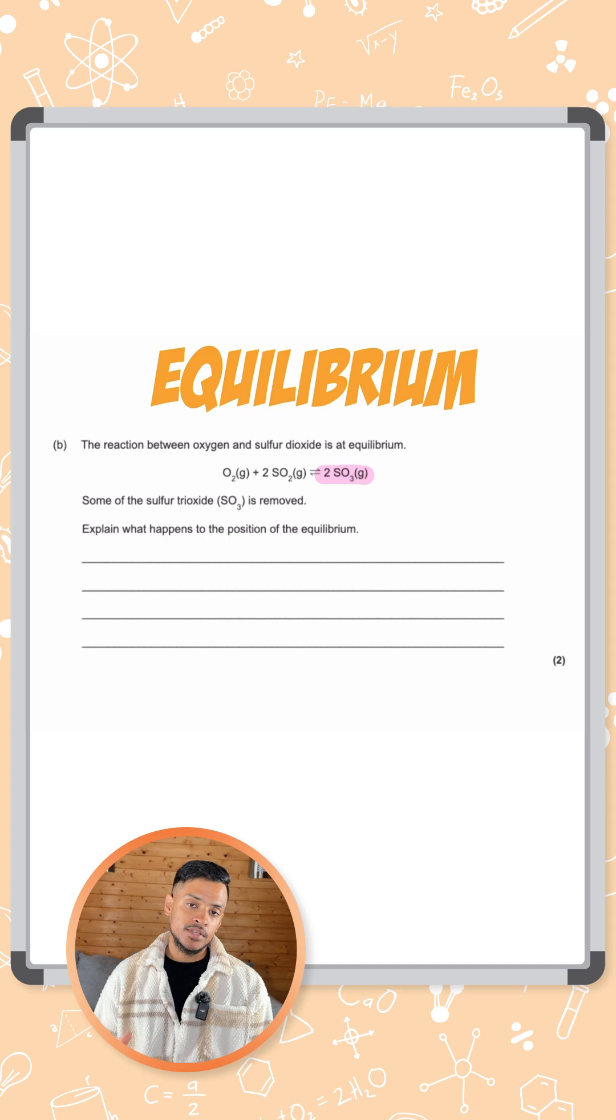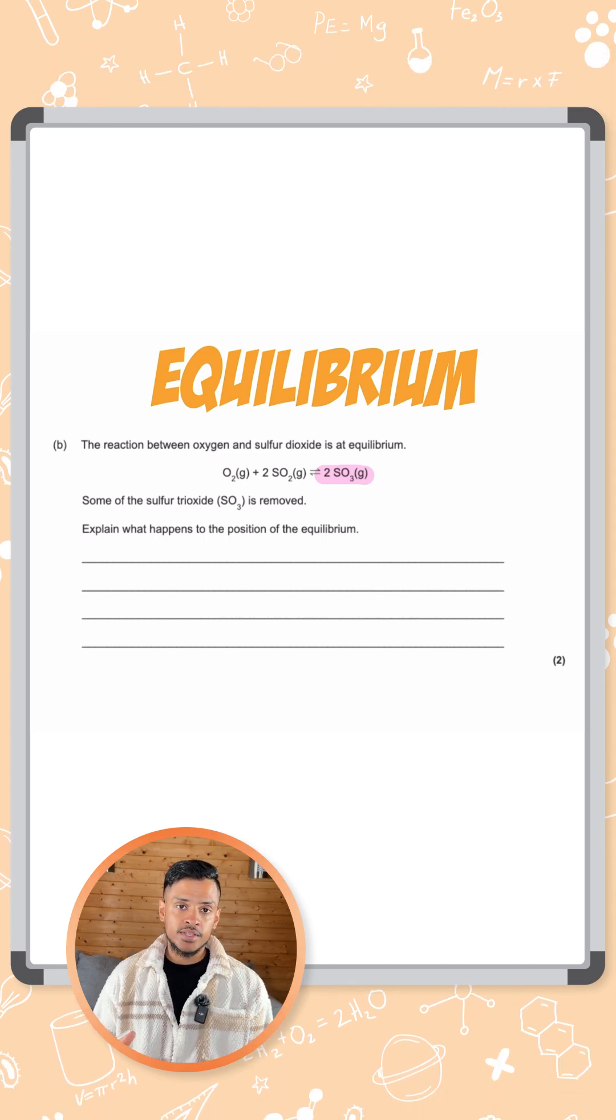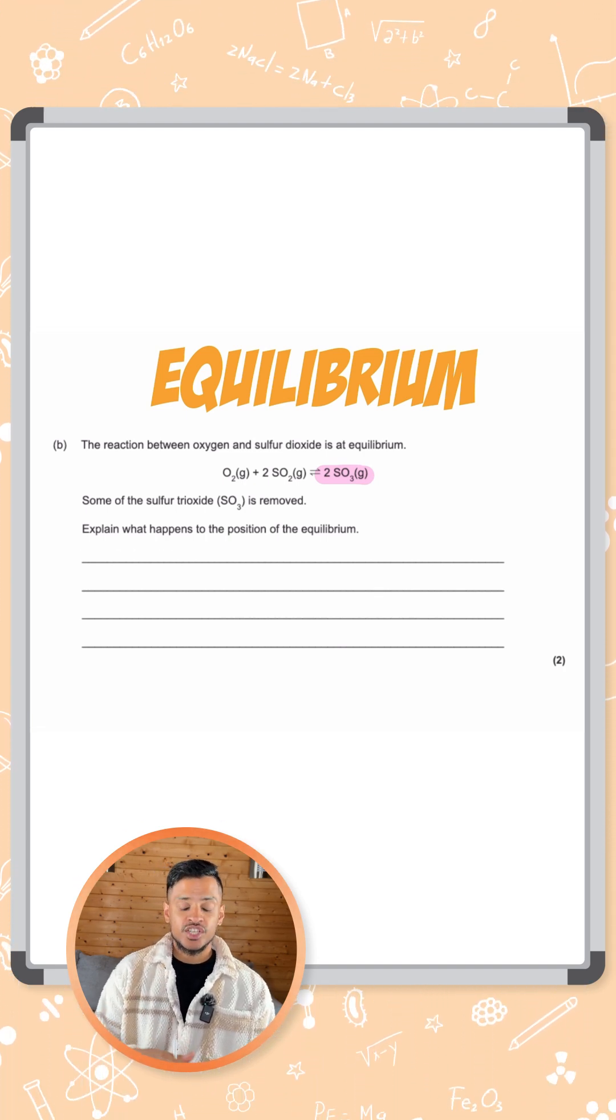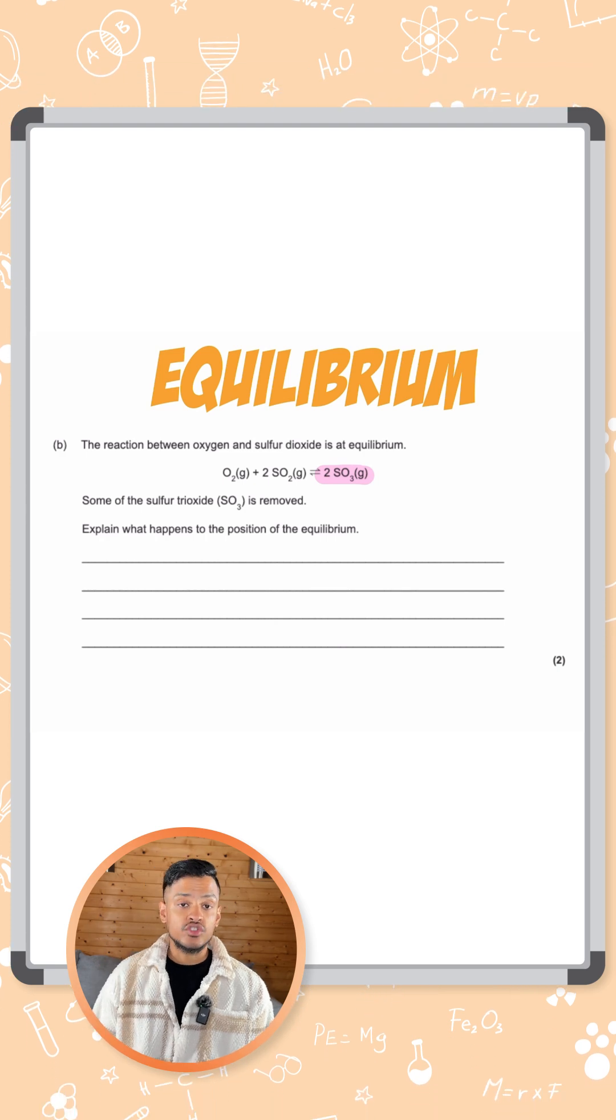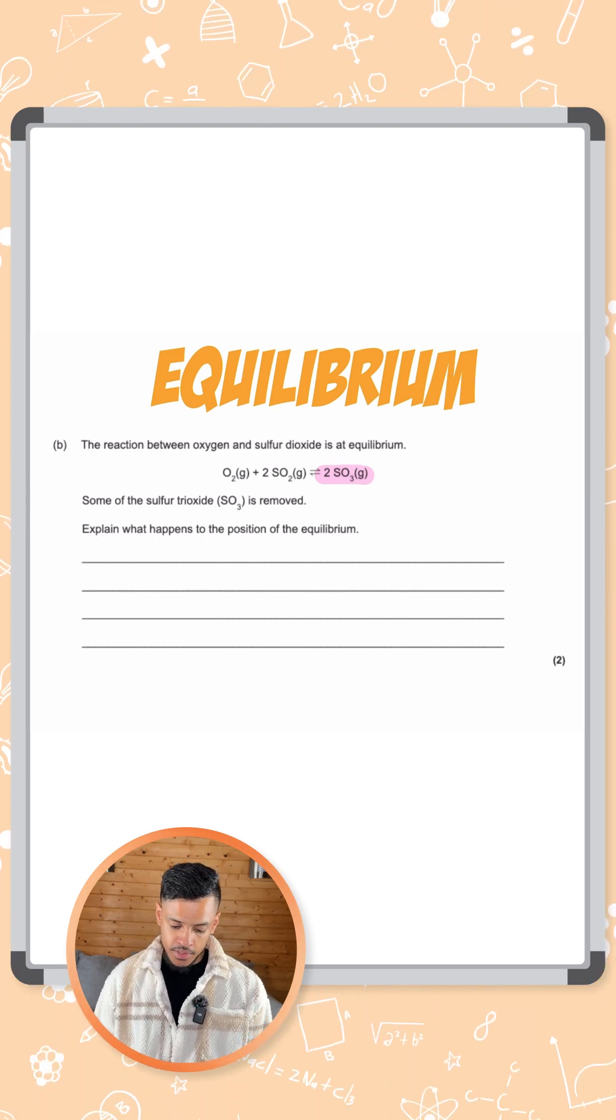If you decrease the concentration of that, the rule is the system will try and counteract the change by shifting to the right to try and increase it back up. So for two marks here,